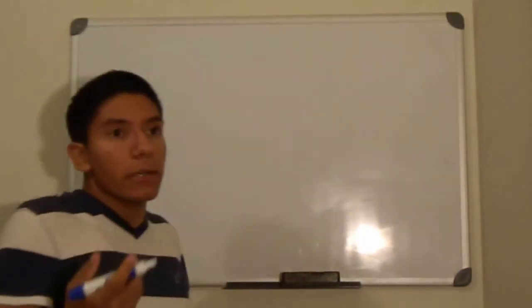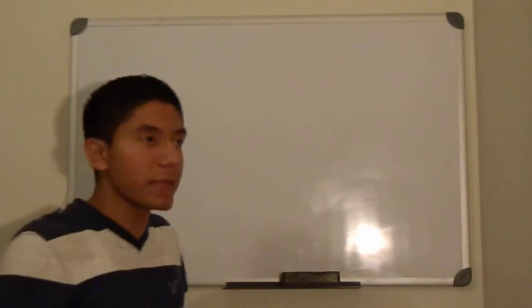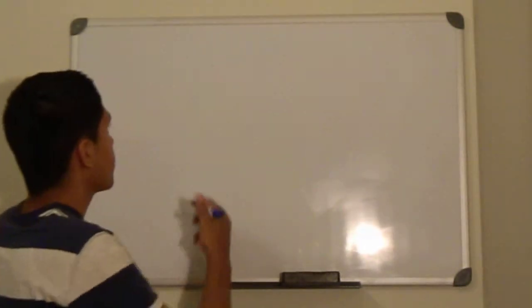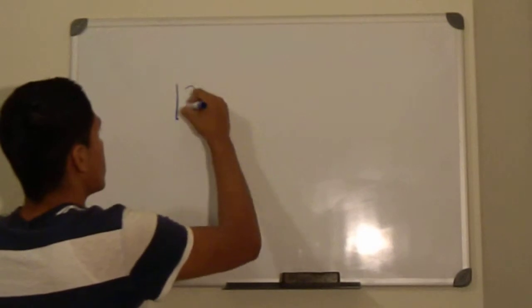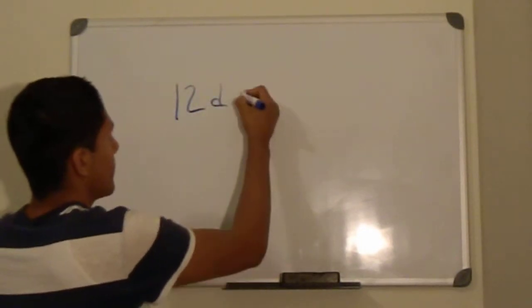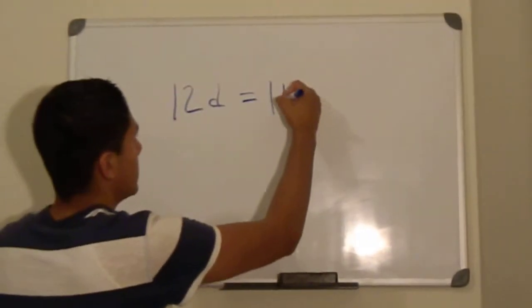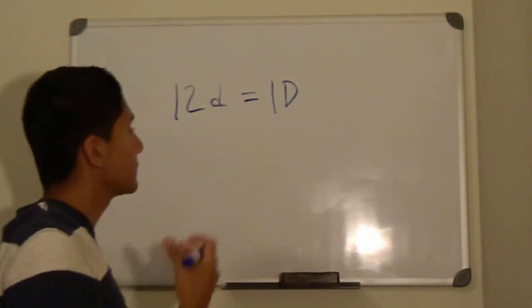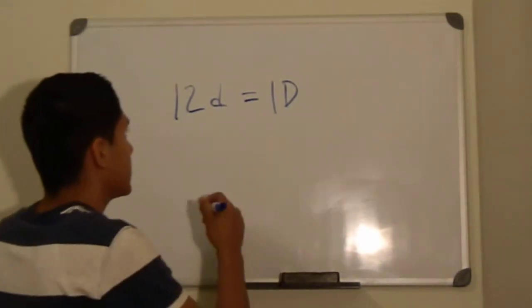Imagine donuts. If you have 12 donuts, then that is one dozen. So a mole is the same concept.